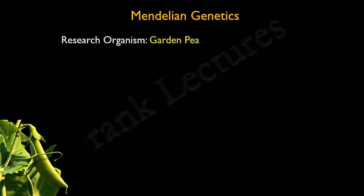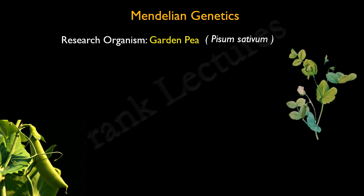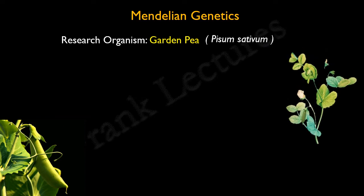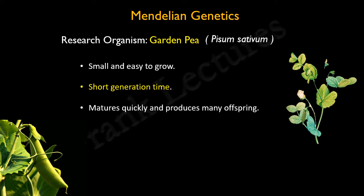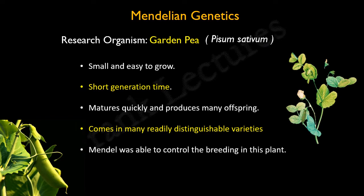Mendel's experiments involved breeding different varieties of the garden pea. Garden pea was his research organism. The scientific name of garden pea is Pisum sativum. The choice of garden pea as research organism proved advantageous for the study of heredity for the following reasons: garden pea is small and easy to grow, it has a short generation time, it matures quickly and produces many offspring, pea plants come in many varieties with easily distinguishable characteristics. Most importantly, Mendel was able to control the breeding in this plant, which was possible because of the flower structure of the garden pea plant.